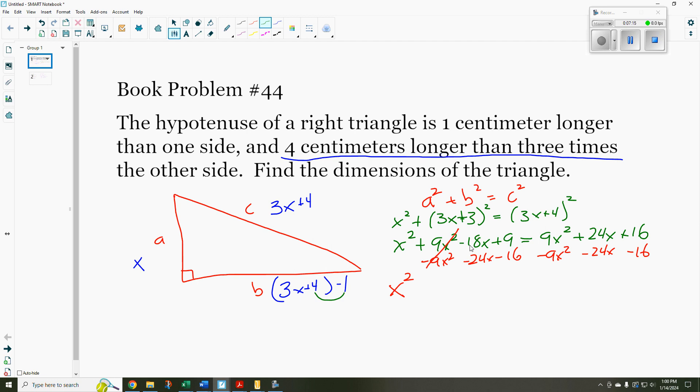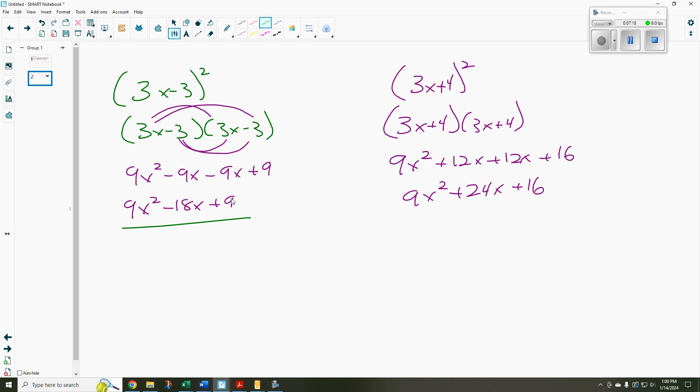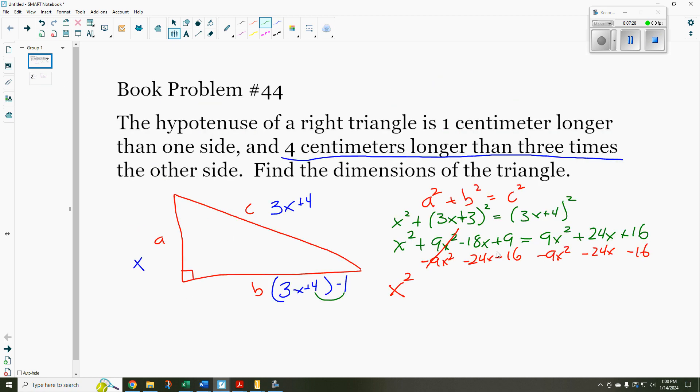All that does is, when I FOIL it out over here, instead of being minus 9 x minus 9 x, it's plus 9 x plus 9 x. So it's plus 18 x. So this is a plus 18 x. 18 x minus 24 x would be minus 6 x. And then over here, that gives me minus 7 equals 0.